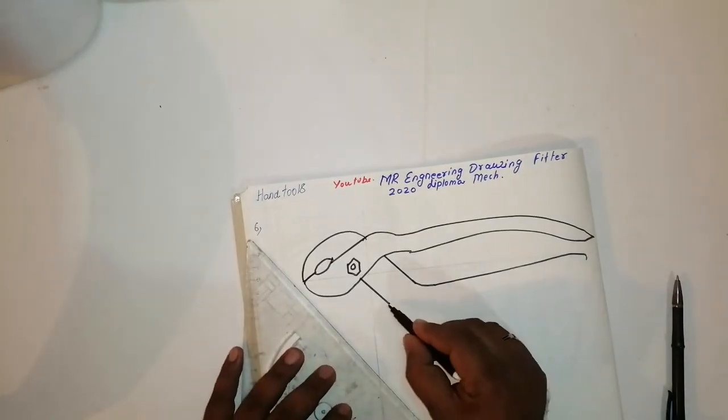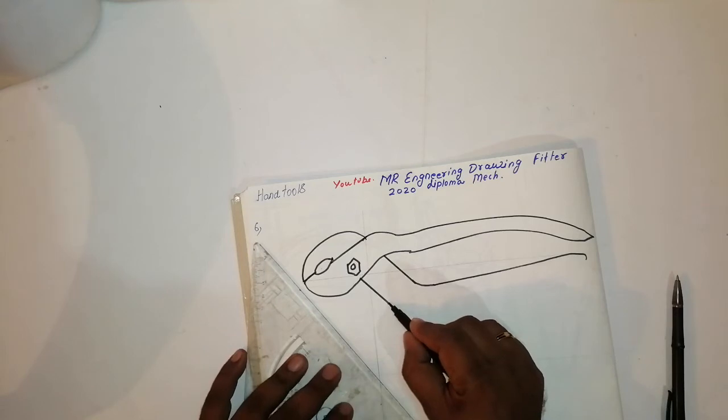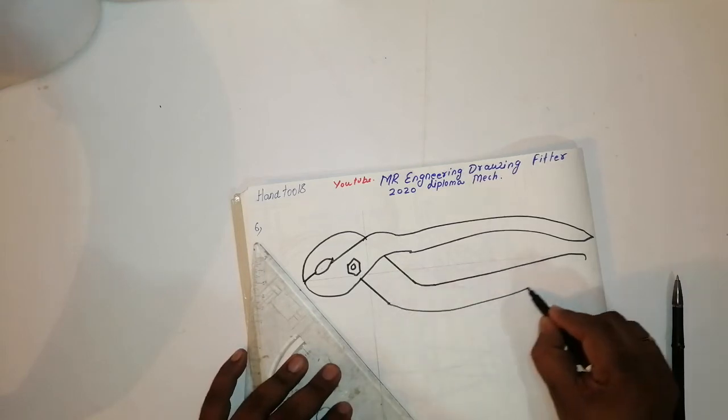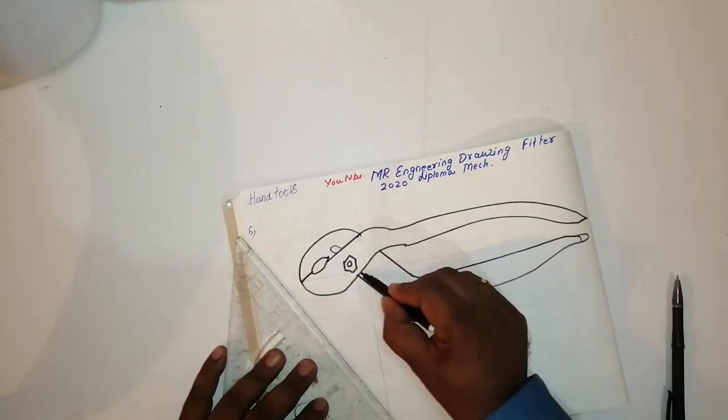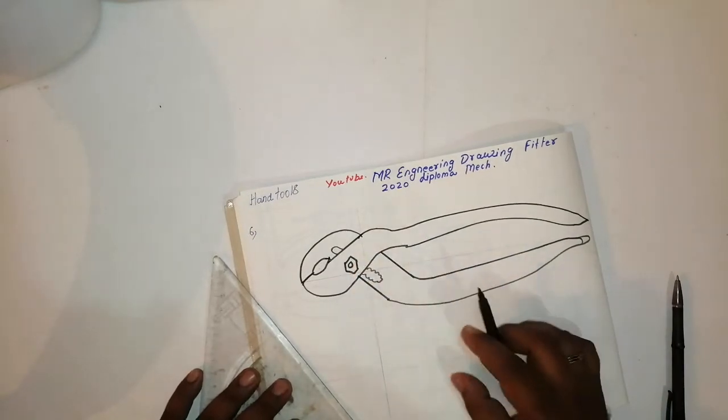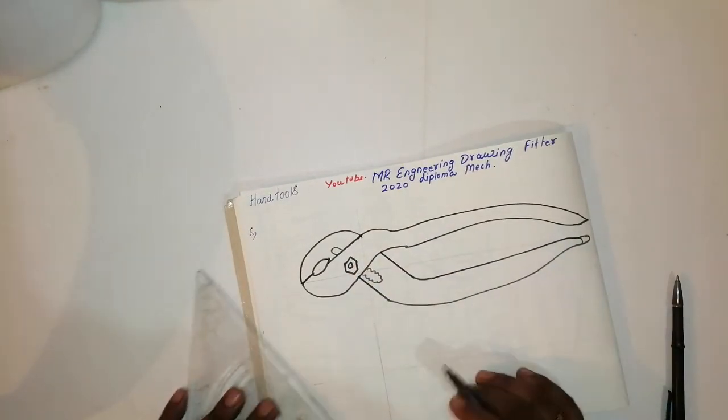After that, take this curve and join this handle. The handle will come like this. This is the gripper where the nut can be adjusted here and there. If you like this video, please share to your friends and comment.